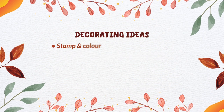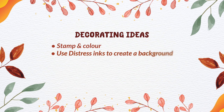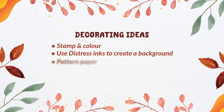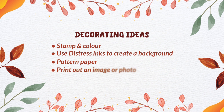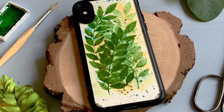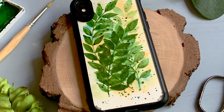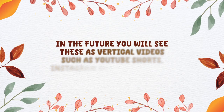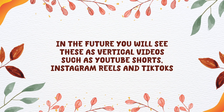You can use stamps and color, distress inks or other inks to create a background. You can use pattern paper, print out a background or a photo, or you can do what I did and paint your own background. Let me show you how I painted this insert for my clear case, where I painted overlapping leaves. In the future, I will be making these mainly as vertical videos, but for this video I wanted to show you the full process.